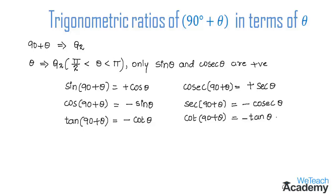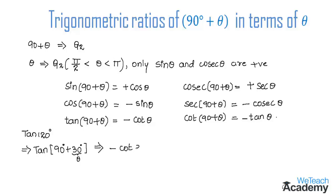Now let us discuss examples using these formulas. Find the value of tan 120°. We write tan 120° as tan(90° + 30°), which is in the form tan(90° + θ) = minus cot θ, giving minus cot 30° = minus root 3. So the value of tan 120° is minus root 3.